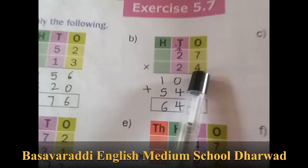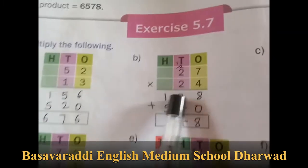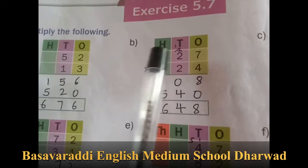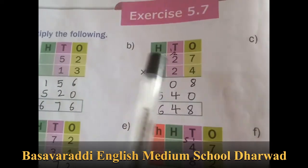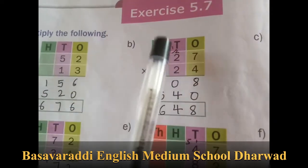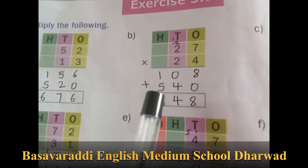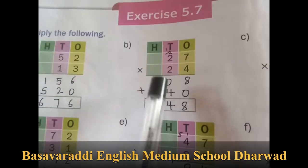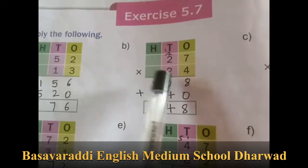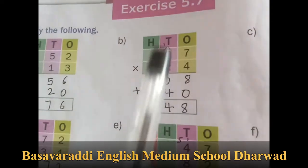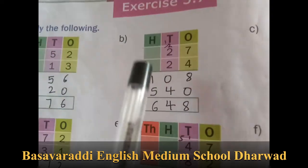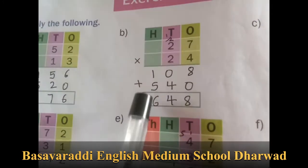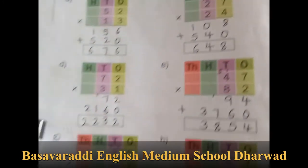Now second one: 27 into 24. So 4 times 7 is 28, and 4 times 2 is 8. 8 plus 2 is 10. Afterwards, 1 space we put 0. Going to tens place: 2 times 7 is 14, 1 is carry over. 2 times 2 is 4, plus 1 is 5. So 648.